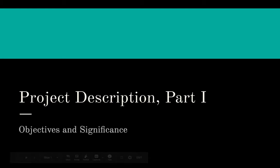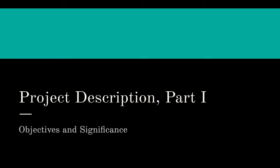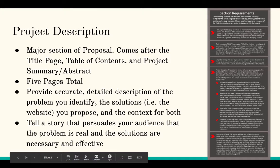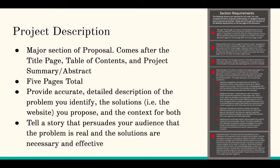Good morning, everyone. Welcome to the first video, which will cover the first part of the project description: the objects and significance section. Remember that the project description is the major section of your proposal — it comes after the title page, table of contents, and summary or abstract. Here's the assignment page showing that structure, including the project summary or abstract, which we'll be drafting this week.